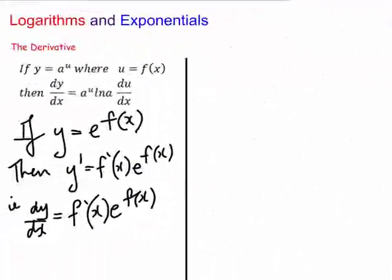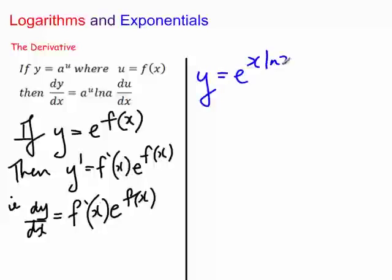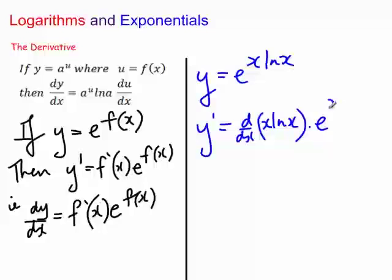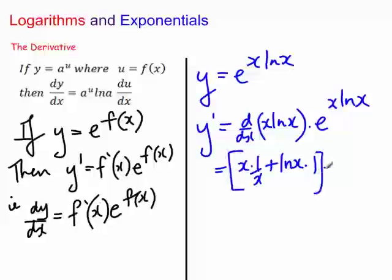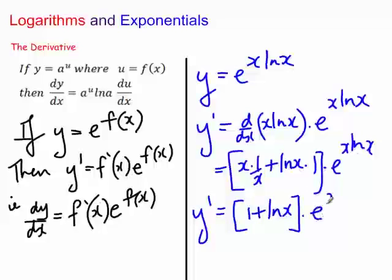Let's do y equals e to the x ln x. This is a little more complicated. The derivative is d/dx of x ln x, times e to the x ln x. Now x ln x is a product, so using the product rule: x times (1/x) plus ln x times 1, times e to the x ln x. This simplifies to (1 + ln x) times e to the x ln x.